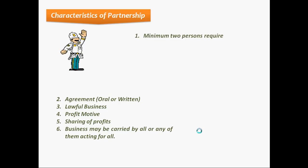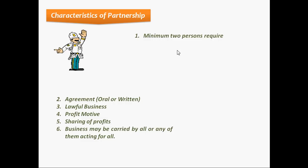The first characteristic: to start a business in partnership, we require a minimum of two persons. What about the maximum number of partners? In case of banking business, the maximum number of partners can be 10. And in case of other business, other than banking business, the maximum number of partners can be 20. But the minimum we require is two persons.